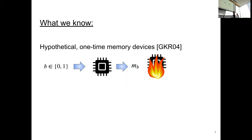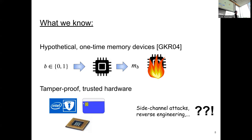These memory devices basically store two messages, and you can retrieve only one of them, but not both, which imitates the functionality of non-interactive oblivious transfer — one out of two oblivious transfer. That was just an assumption, and that work discussed the high-level direction of how to build these devices from tamper-proofed hardware tokens. The only way we know to build these special memory devices is by tamper-proofing a whole computation, assuming these hardware tokens resist side-channel attacks and reverse engineering.